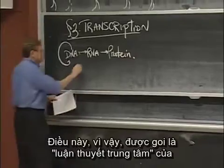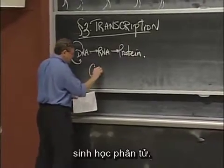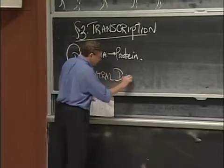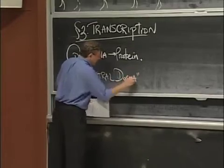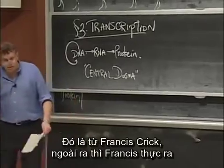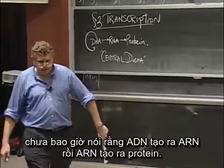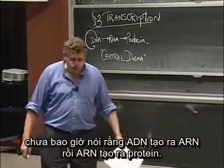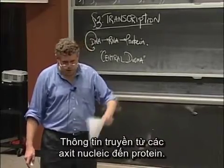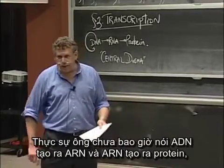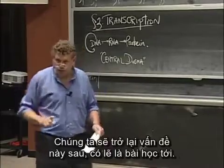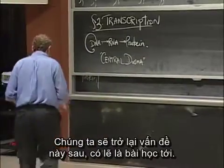This, by the way, gets the name the central dogma of molecular biology due to Francis Crick. And as an aside, Francis actually never said DNA goes to RNA goes to protein. What he said was nucleic acids go to protein — the information flows from nucleic acids to proteins. He never actually said DNA goes to RNA goes to protein, and that's an important point we'll come to at some point, probably next time.